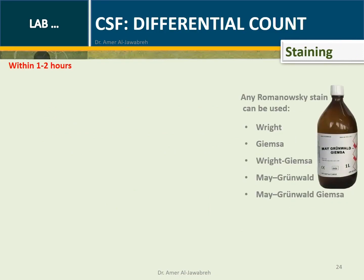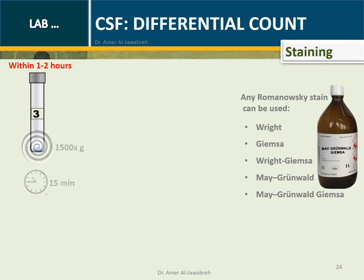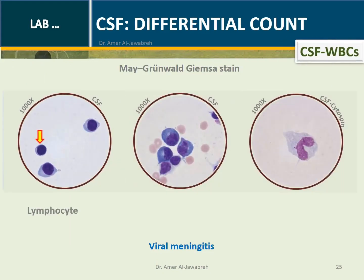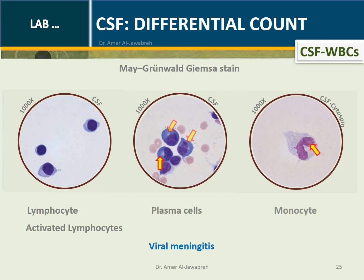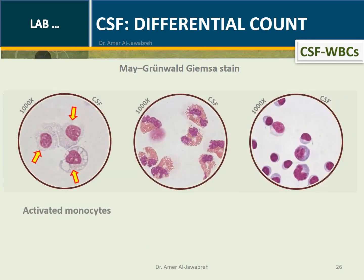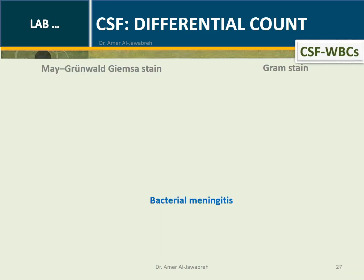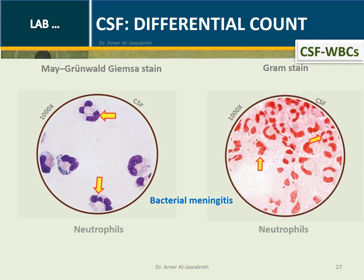CSF Differential Count — Staining: Any Romanovsky stain can be used, such as Giemsa or May-Grünwald-Giemsa. Spread 20 µL of CSF sediment on a clean slide and stain according to protocol. Viral meningitis is evidenced by the presence of lymphocytes, plasma cells, and monocytes. Eosinophilic meningitis, indicating parasitic infection, shows activated monocytes, lymphocytes, and plasma cells. Bacterial meningitis: comparison between May-Grünwald-Giemsa stain and gram stain demonstrates neutrophils and intracellular bacteria in both stains.